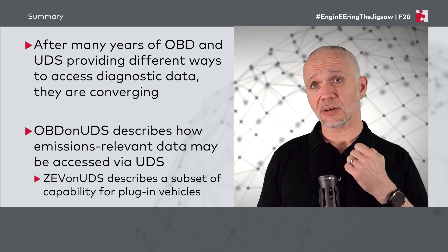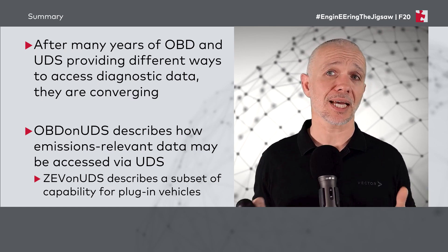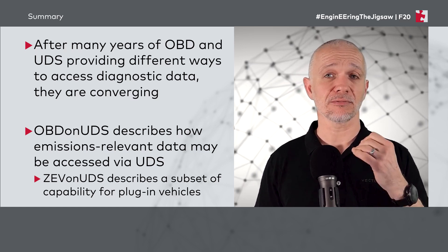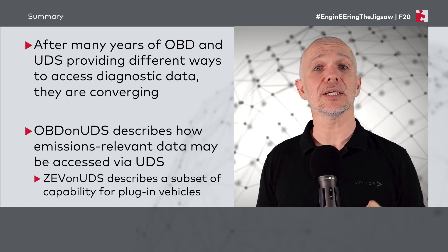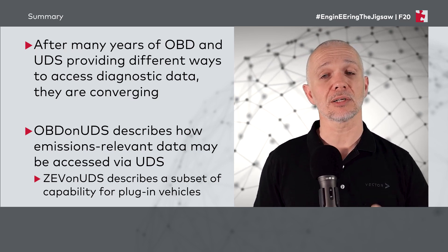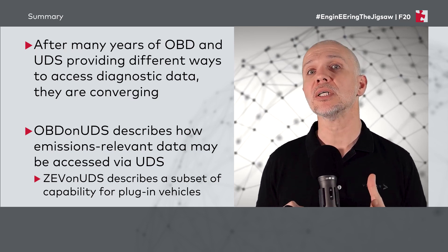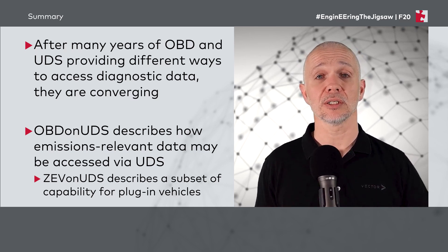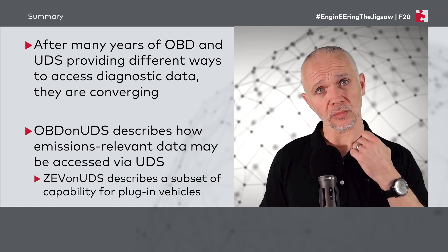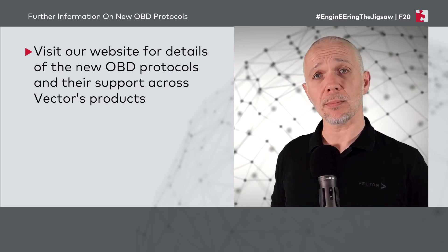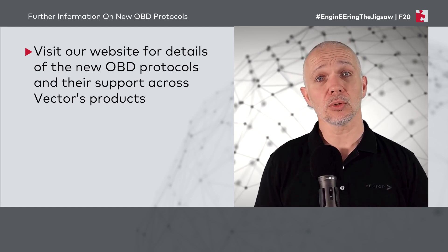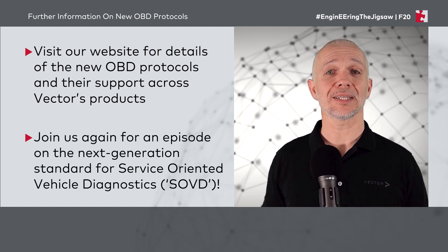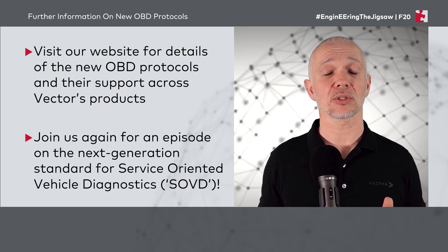As a summary: after many years of OBD and UDS providing different ways to access diagnostic data, they are now converging. OBD on UDS describes how emissions-relevant data may be accessed via Unified Diagnostic Services. ZEV on UDS describes a subset of capability required for plug-in vehicles, covering battery state of health and grid emissions that may be caused during charging. If you want more information on these new OBD protocols, please visit our website for details and their support across Vector's products. Join us in a future episode where we'll talk about the next generation standard for service-oriented vehicle diagnostics, or SOBD.